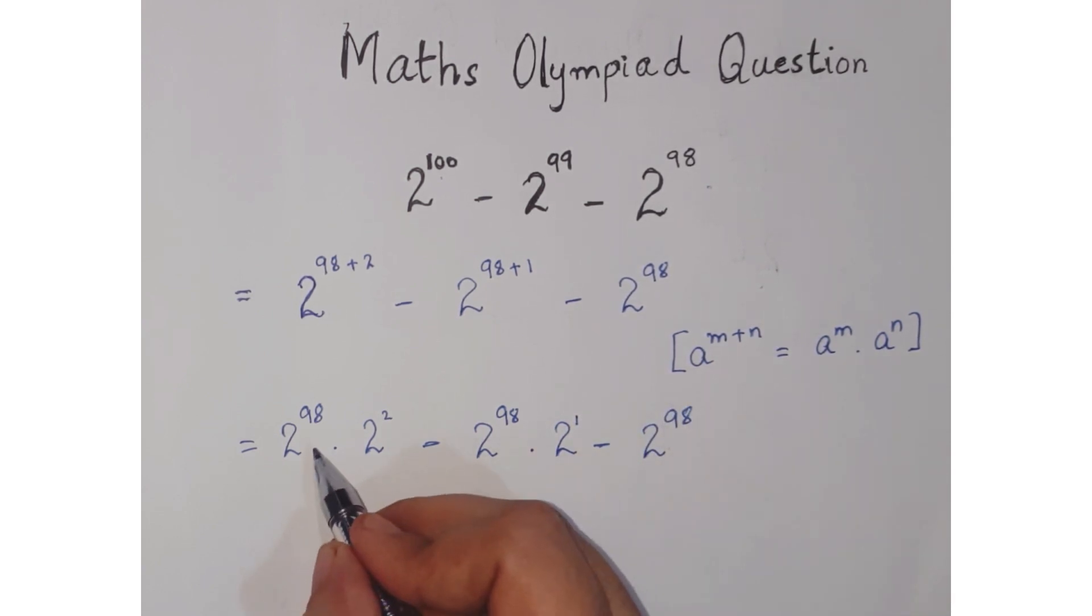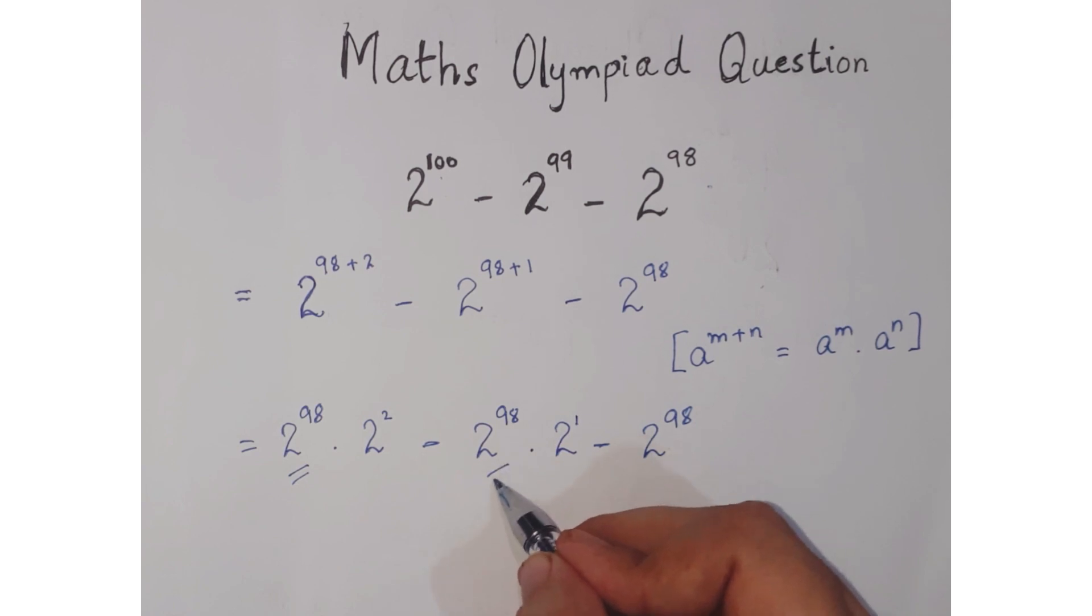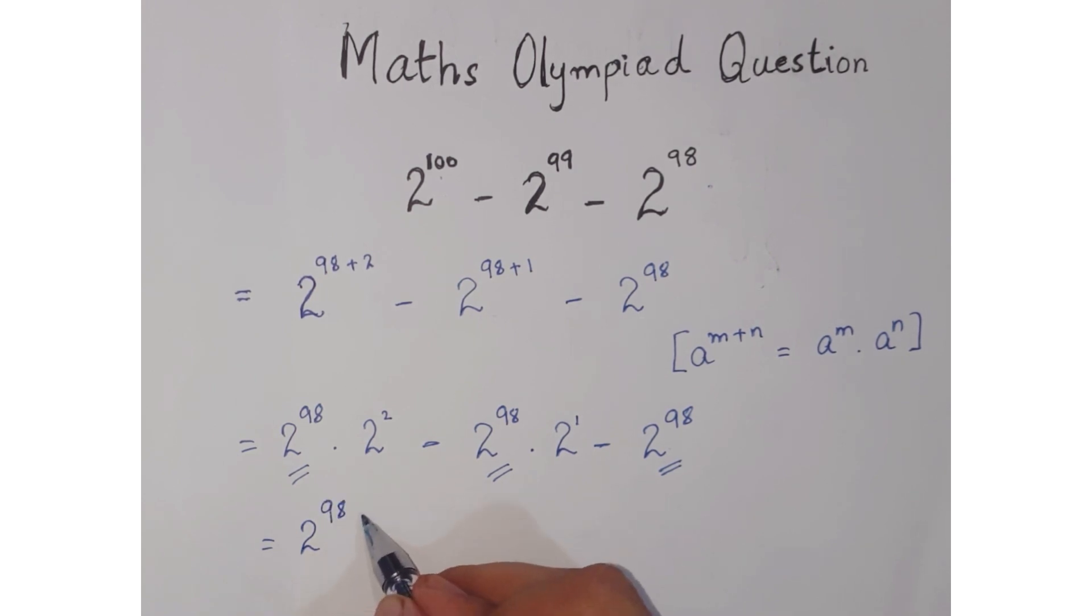Look at these three terms - 2 raised to the power 98 in all three are common terms that we can take out. So you can write 2 raised to the power 98 out.